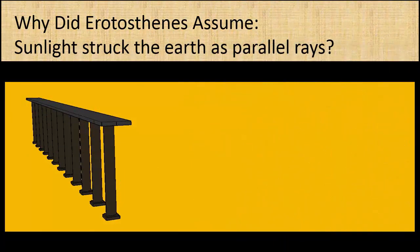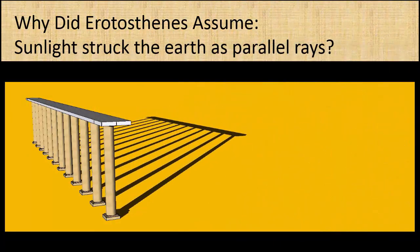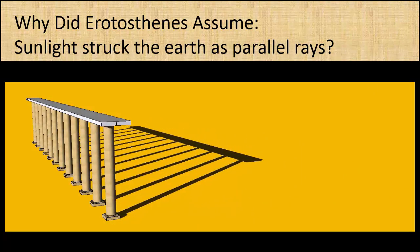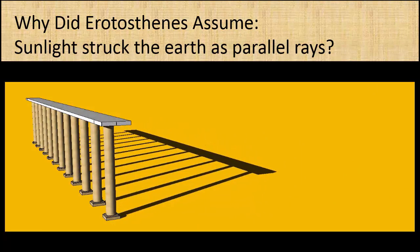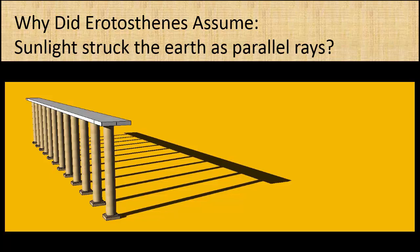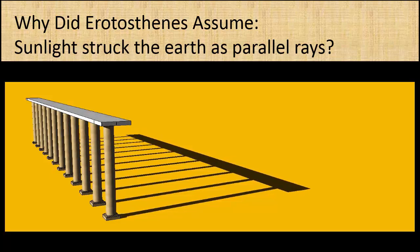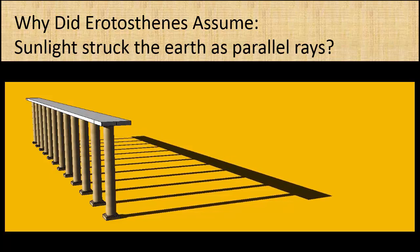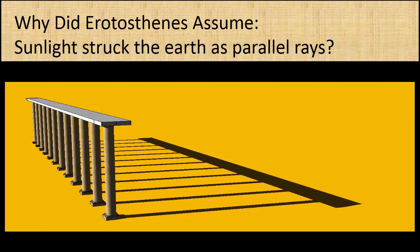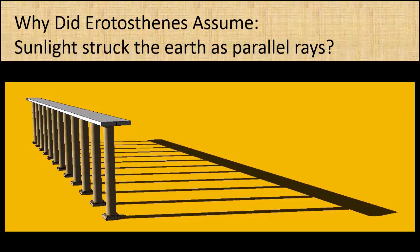Why did Eratosthenes assume sunlight struck the earth as parallel rays? Well, from vertical columns, it was easy to observe how shadows moved during the day, showing the sun's rays were parallel as they struck the earth. From Euclid, he knew that if the sun and earth were very distant, the incoming rays would be so close to exactly parallel, he could ignore any small errors, simplifying the problem.